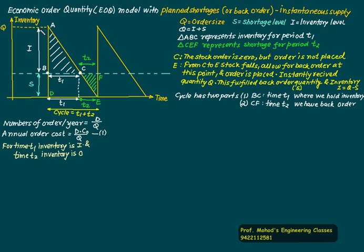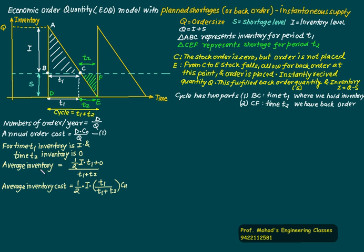For time T1 we have inventory I, and for time T2 we have zero inventory. The average inventory is the area of the triangle, which is one-half times I times T1, divided by the total cycle period T1 plus T2. The average inventory holding cost is the average inventory multiplied by the holding cost CH.